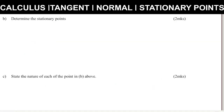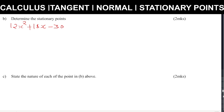Part B: determine the stationary points. At stationary points, the gradient is always zero. We already have the gradient function from differentiating: 12x² + 18x - 30. At a stationary point this equals zero. We can divide all through by 6 to simplify, giving 2x² + 3x - 5 equals zero. This quadratic will give us two values of x, which correspond to two stationary points.